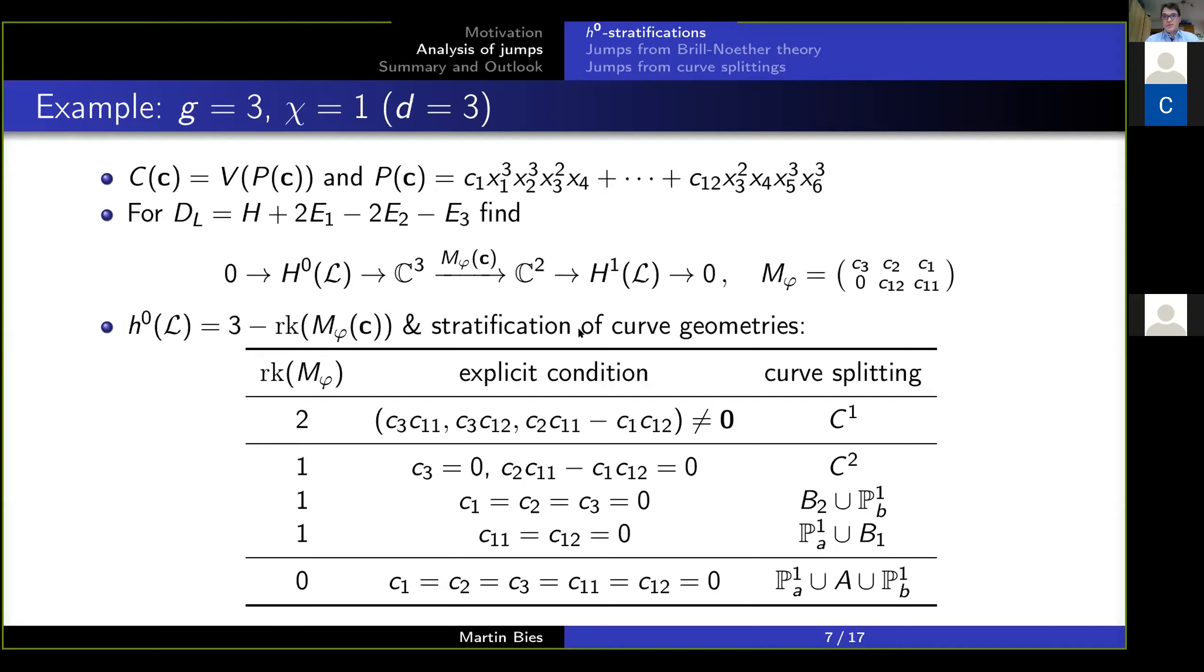So, the matrix has rank 2 if at least one of the 2 by 2 minors is non-zero, and here I'm listing all three 2 by 2 minors of this matrix which are non-trivial. So as long as one of these is non-zero, the matrix has rank 2. If all of these are zero, but the matrix is non-trivial, we have rank 1, and it turns out there's three different conditions for that. And the case that the matrix is trivial corresponds to rank zero.